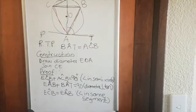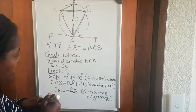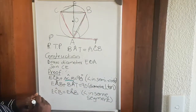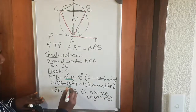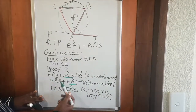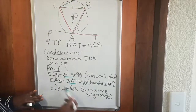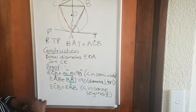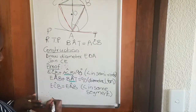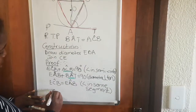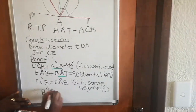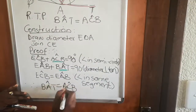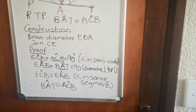Now looking at our proof, the angles we want are A-C-B and B-A-T. We've shown that E-C-B plus A-C-B equals 90 degrees, and E-A-B plus B-A-T equals 90 degrees. Since E-C-B equals E-A-B, it follows that A-C-B equals B-A-T. Therefore angle B-A-T equals angle A-C-B, and the proof is complete.